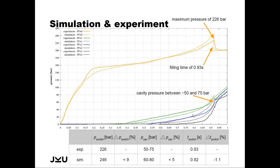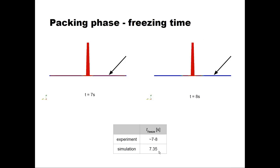The next day the mold arrived and we ran experiments with the settings I had also entered into the simulation. In the experiments we found a maximum pressure of 226 bar, compared to the simulation's 246 bar — a rather good agreement with less than 10 percent deviation. The cavity pressure was found to be between 50 and 75 bar, also a very good agreement, and the switch-over time was also nicely matched. For freezing time, the experiments gave approximately 7 to 8 seconds, and the simulation predicted approximately 7.35 seconds.